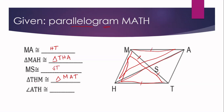Number five: angle ATH is congruent to angle HMA. These two angles are opposite angles in parallelogram MATH. The condition applied is that opposite angles of a parallelogram are congruent.